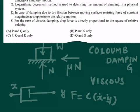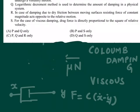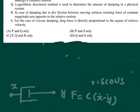That means the third statement is also correct. Now the final statement says: for the case of viscous damping, the drag force is directly proportional to the square of relative velocity. Now I have explained this already.